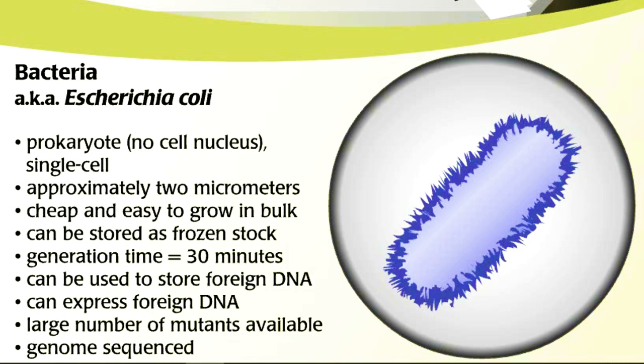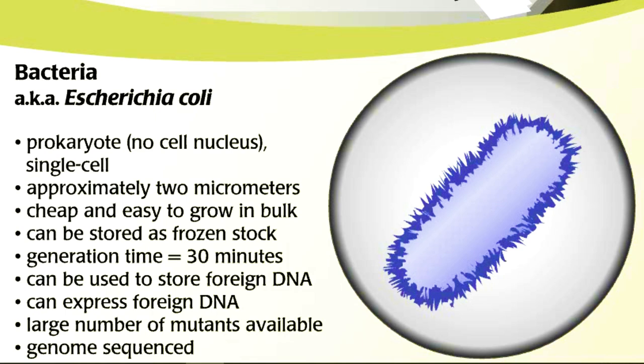Bacteria: E. coli. Prokaryote. Single cell with no cell nucleus. Approximately 2 micrometers. Cheap and easy to grow in bulk. Can be stored as frozen stock. Generation time is 30 minutes.